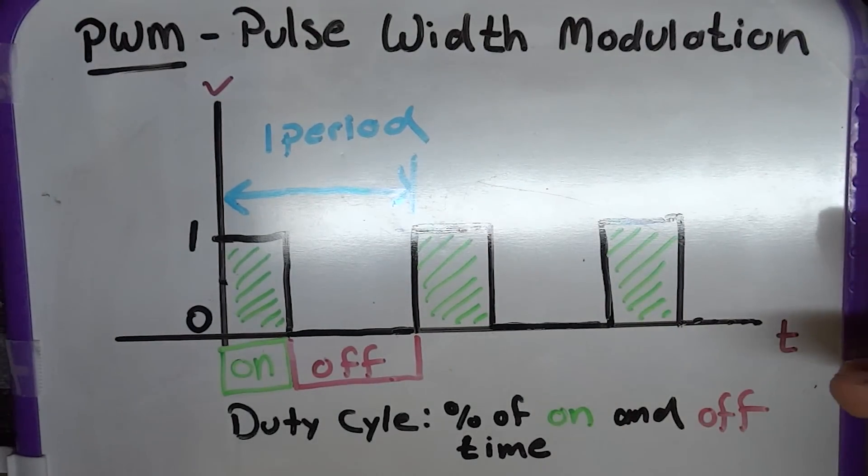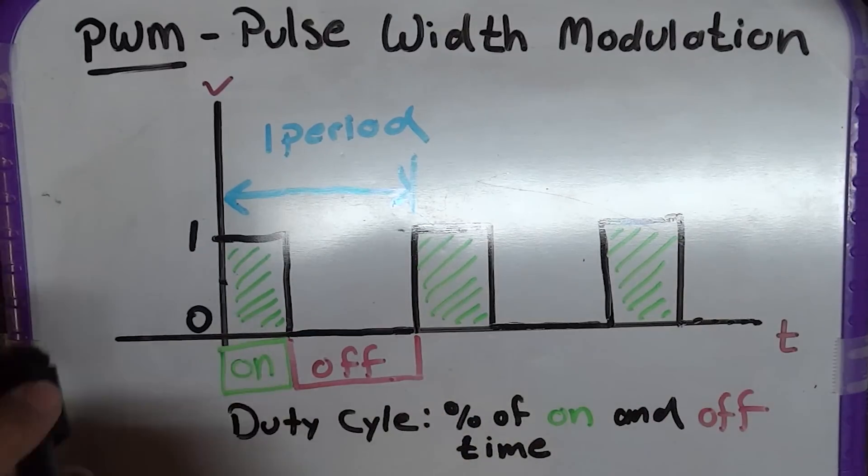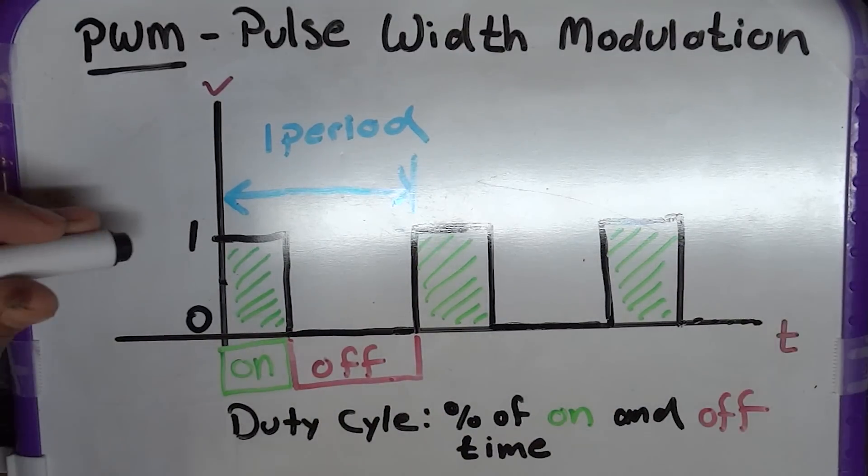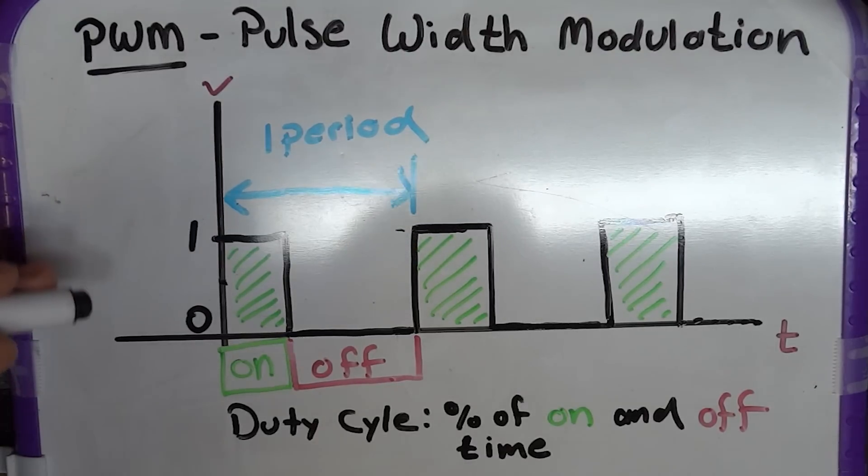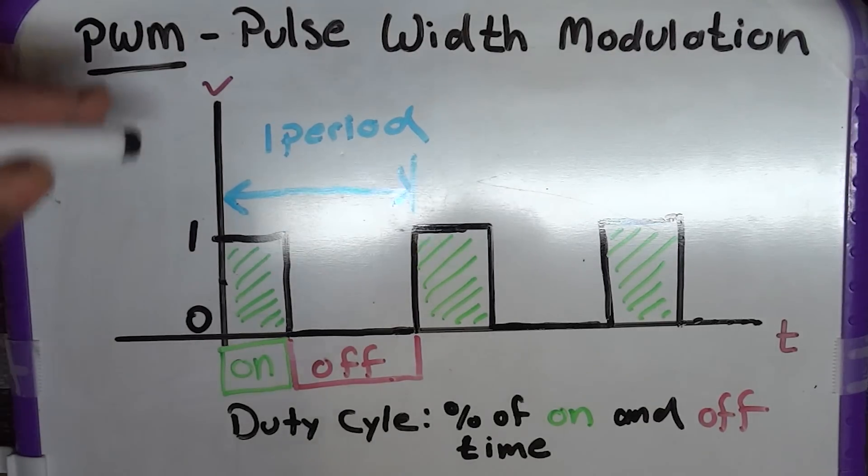So Pulse Width Modulation, what it does is it puts out a signal. In this case we're going to use logical 1, but it doesn't have to be 1 volt. It could be, for example, like on the BeagleBone, it could be 3.3 volts.